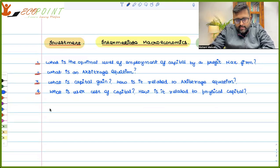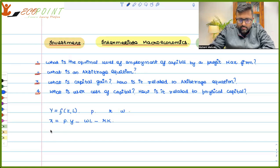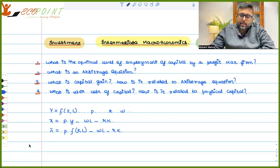Let's say Y is equal to f of K, L - a production function. P is output price, R is the price of capital, and W is the price of labor. So profit will be price into output minus labor cost W into L minus capital cost which is R into K. So you have P, in place of Y you can write f of K, L minus WL minus RK.